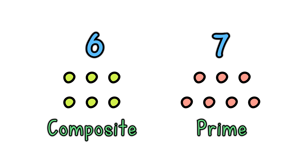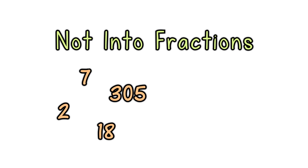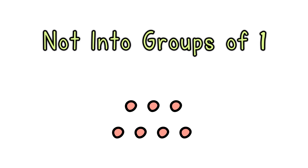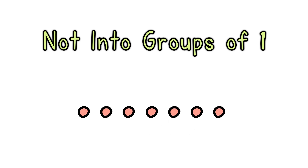But there are some more details. Not into fractions — we are only dealing with whole numbers here. We are not going to cut things into halves or quarters. Not into groups of 1. We could have divided 7 into 7 ones, or 1 seven, but we could do that for any whole number. So we should also say we are not interested in dividing by 1 or by the number itself.